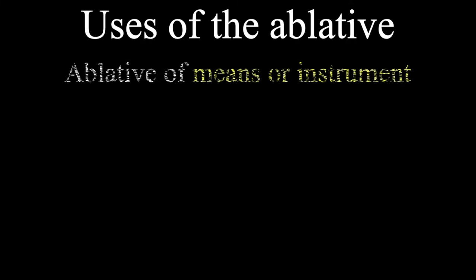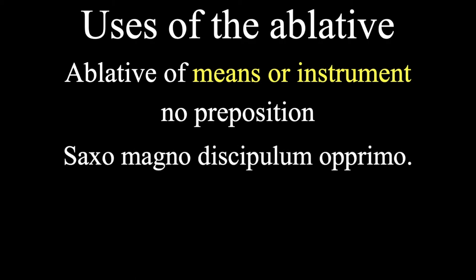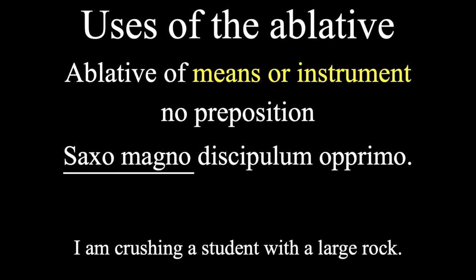Next one. The ablative of means or instrument. It tells us what tool a person is using to accomplish something. It never uses a preposition, so we'll generally add the word with. So, in the phrase, saxo magno discipulum oprimo, we have our ablative over here, and this means, I am crushing a student with a large rock.